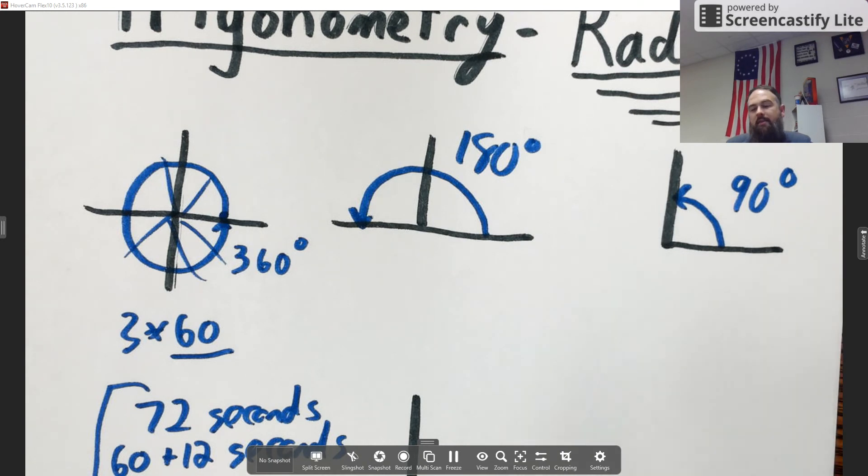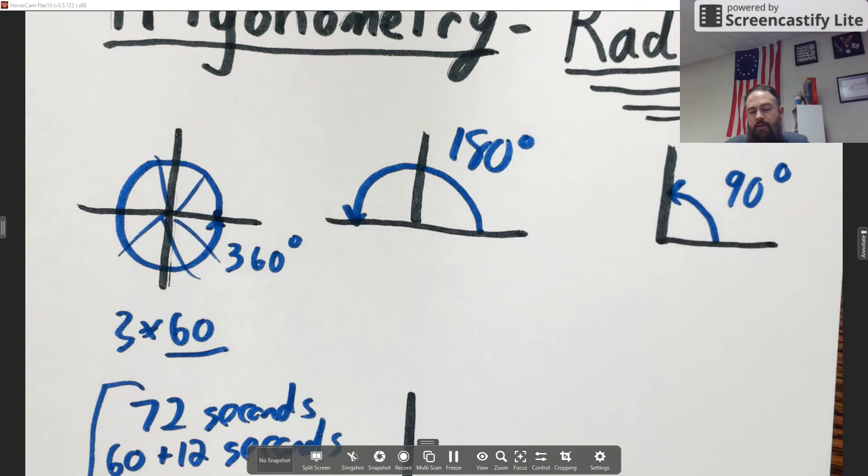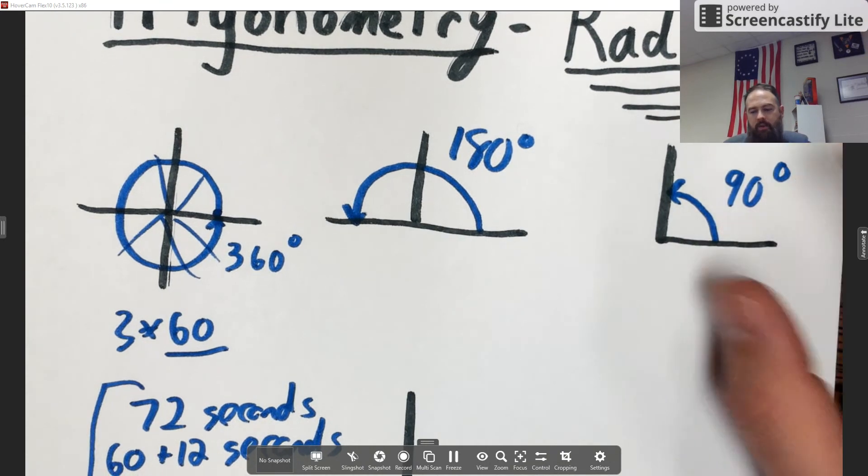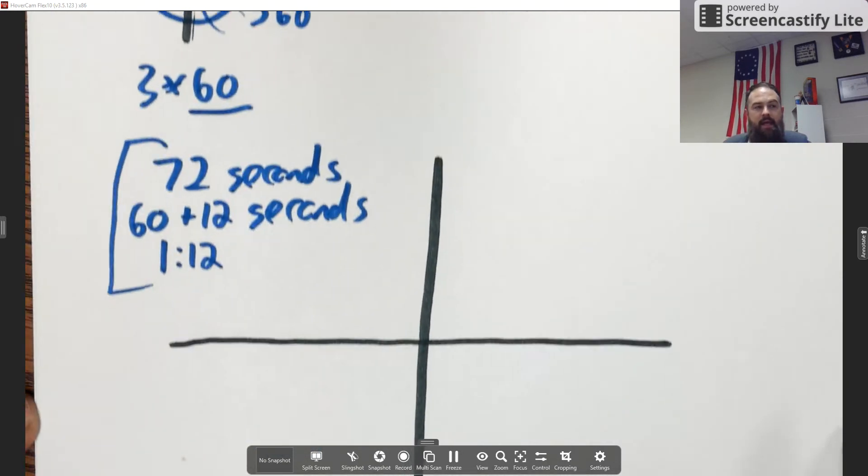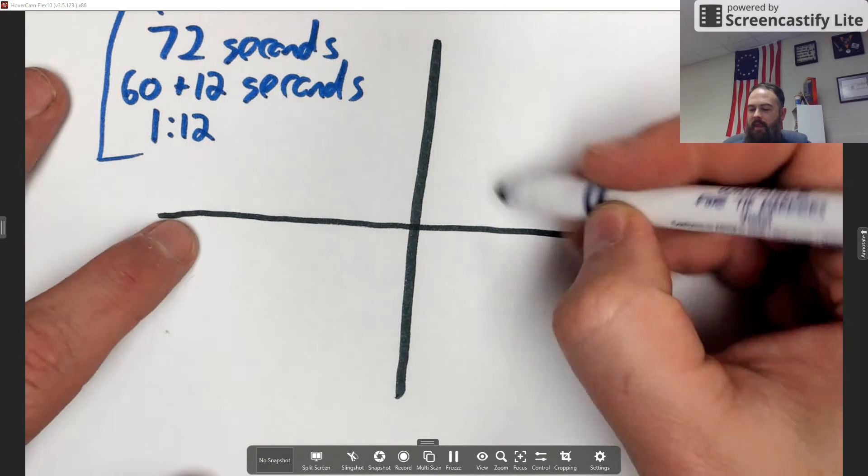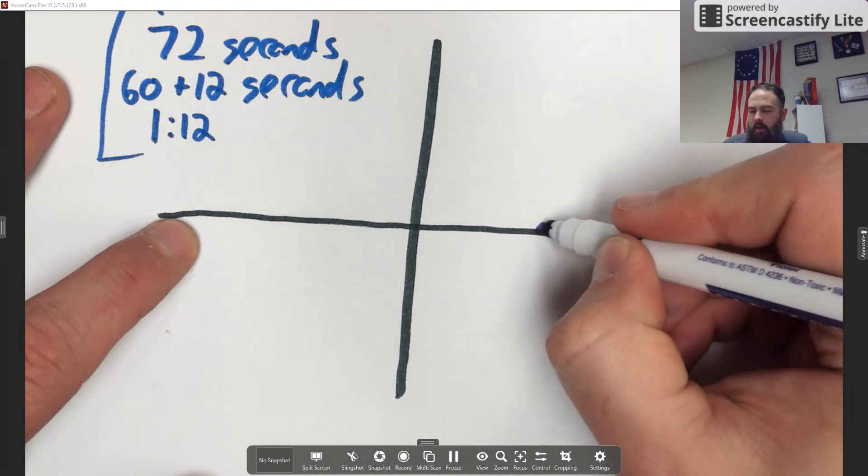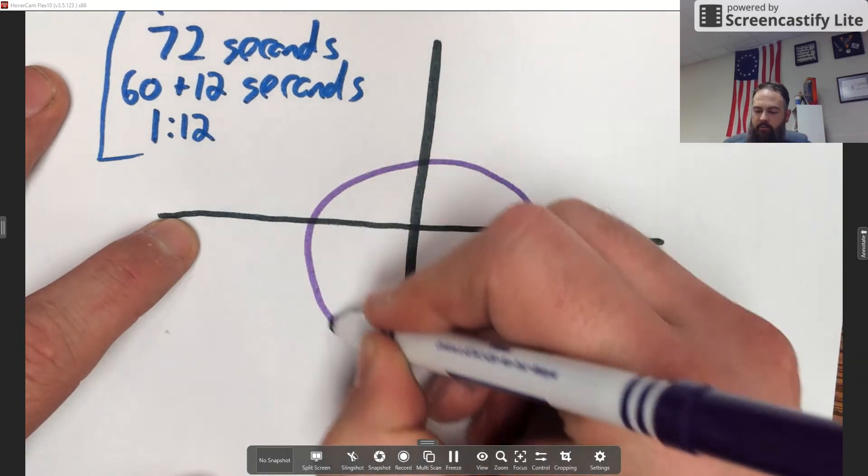This measuring system is called radians. The radians angle measurement system is based on this idea: